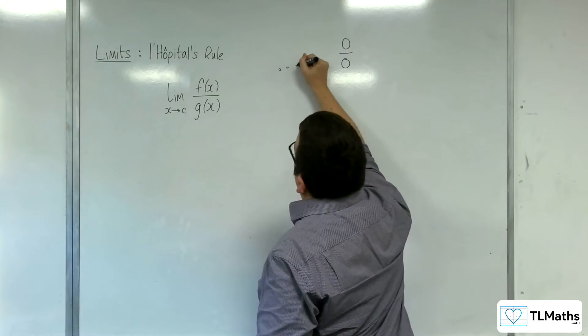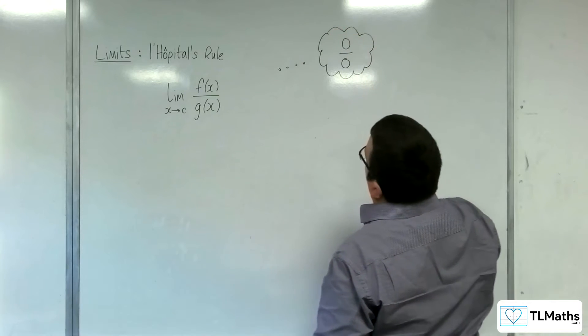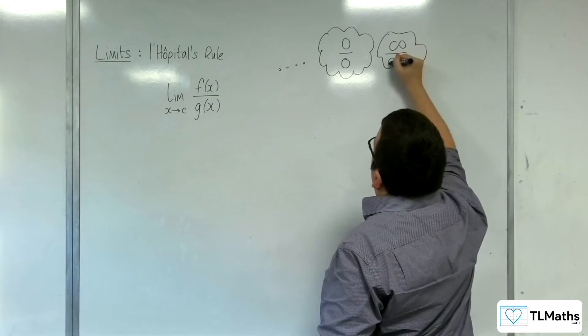So this is what you want to think about. Either you've got 0 over 0, or you've got infinity over infinity.